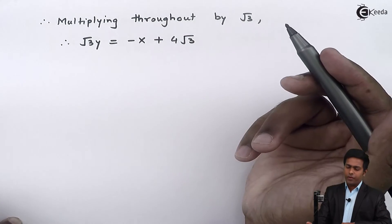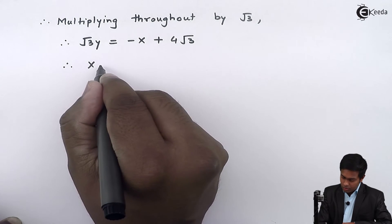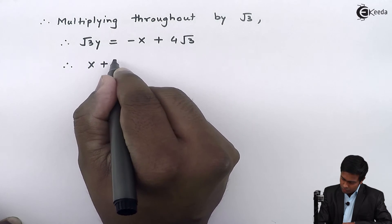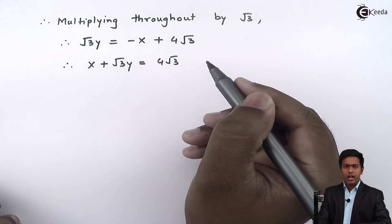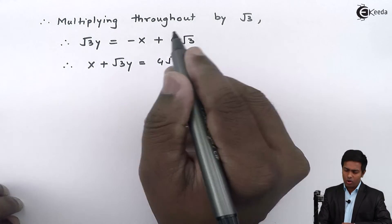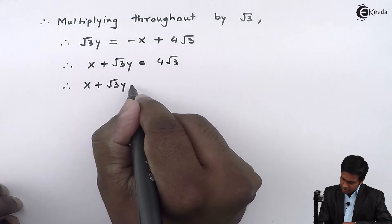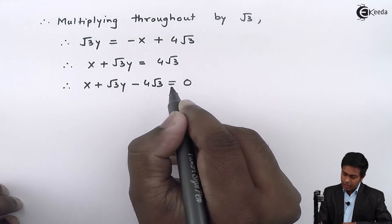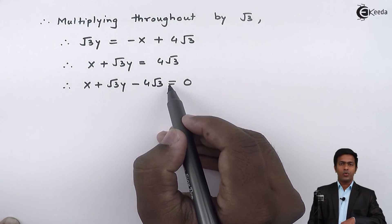So if we take this x on the left hand side, we'll get x + √3y = 4√3. And if we'll take this 4√3 also on left hand side, then we'll get equation of line in the form ax + by + c = 0.